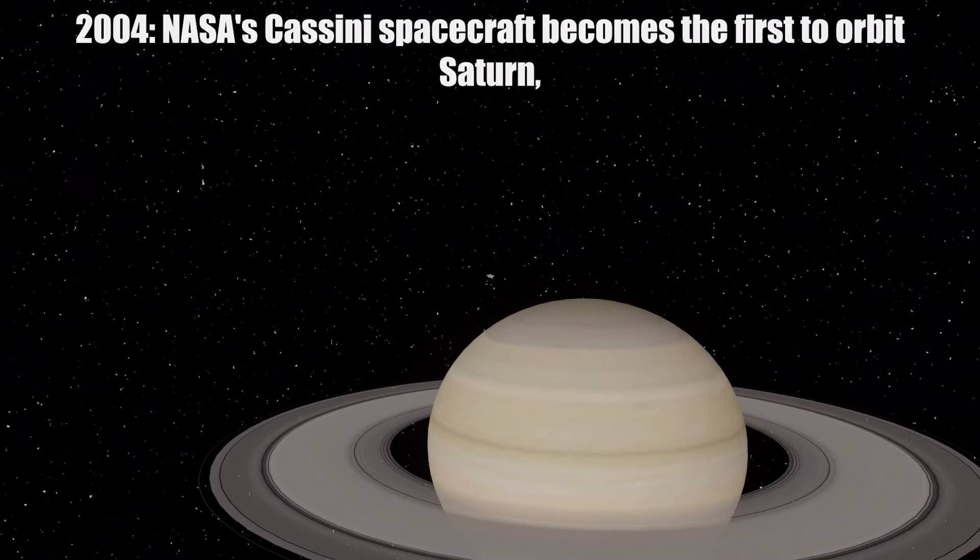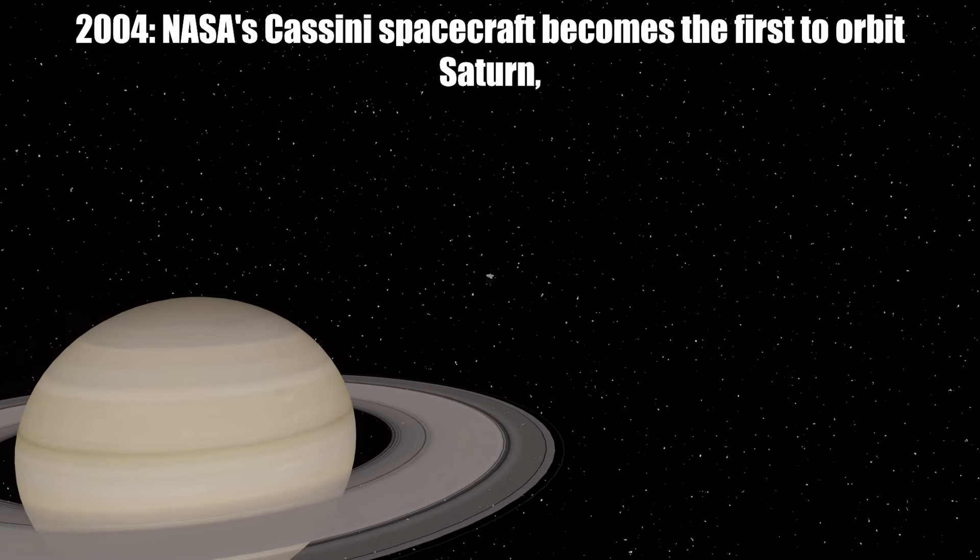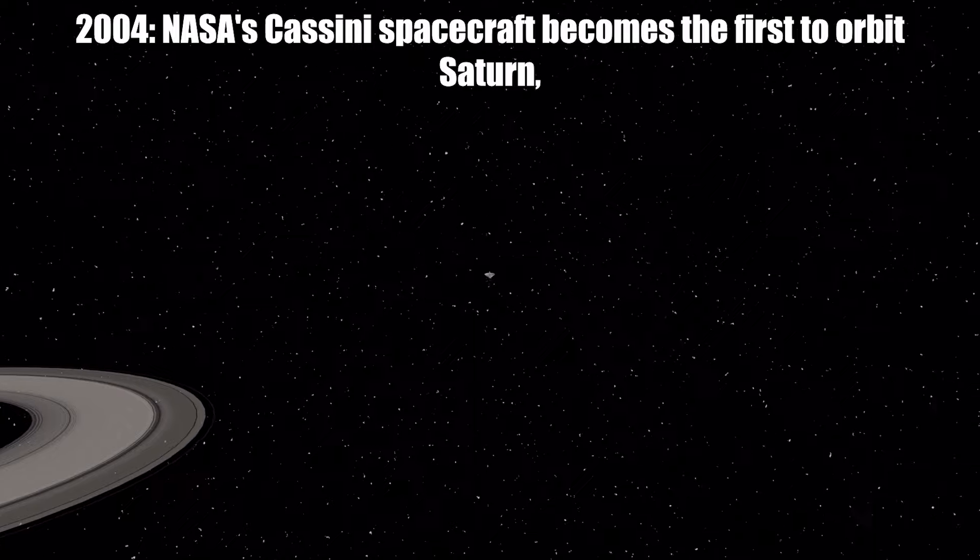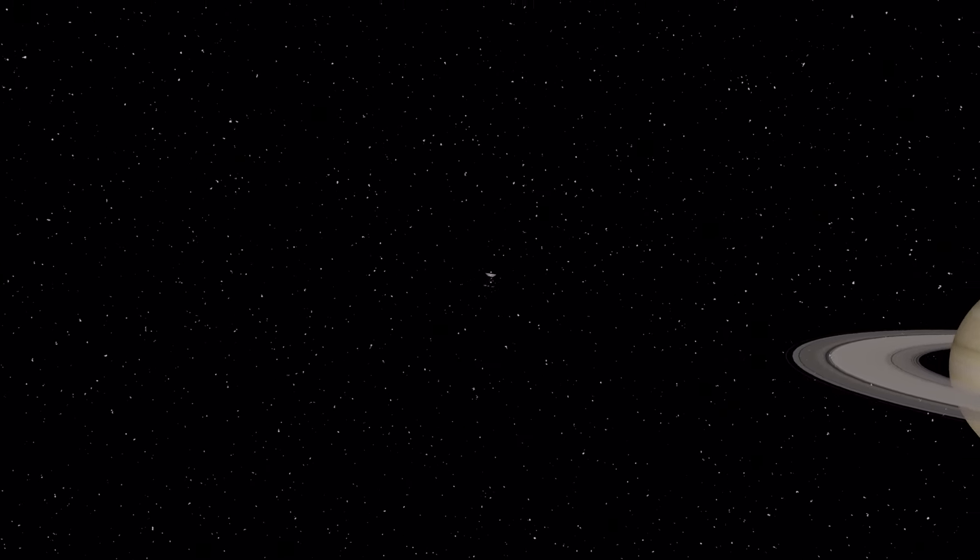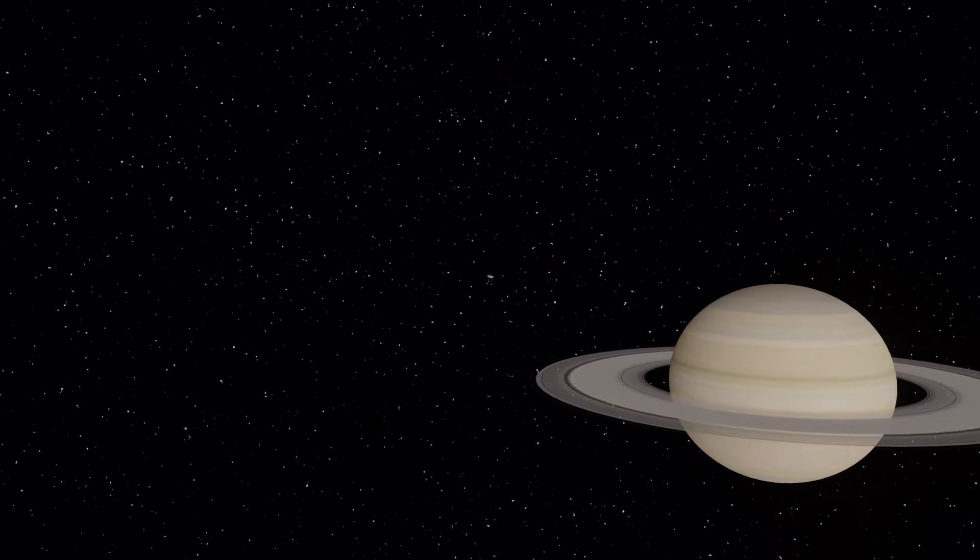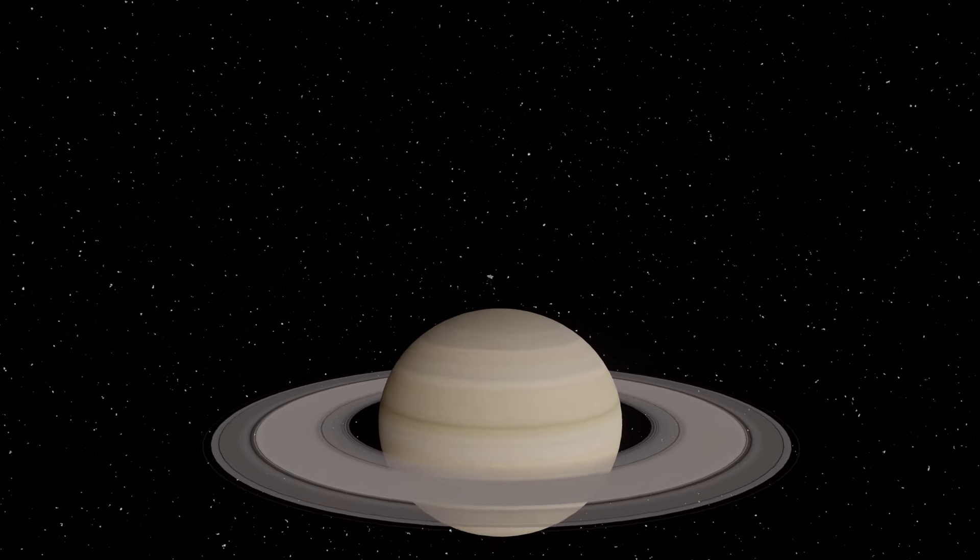In 2004, NASA's Cassini spacecraft became the first to orbit Saturn, beginning a decade-long mission that revealed many secrets and surprises about Saturn and its system of rings and moons.